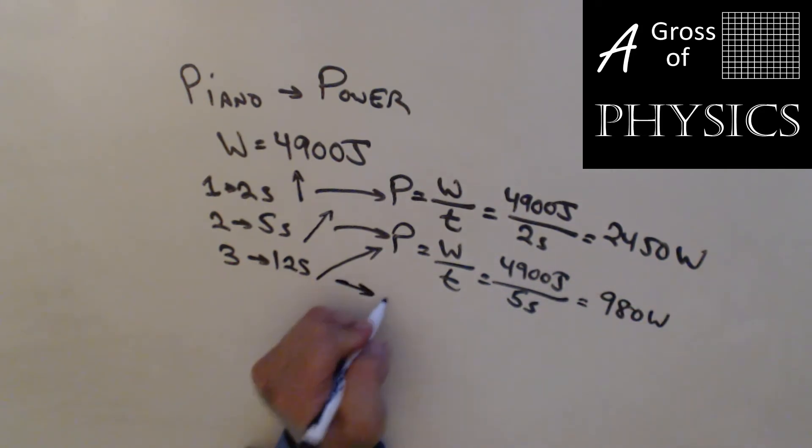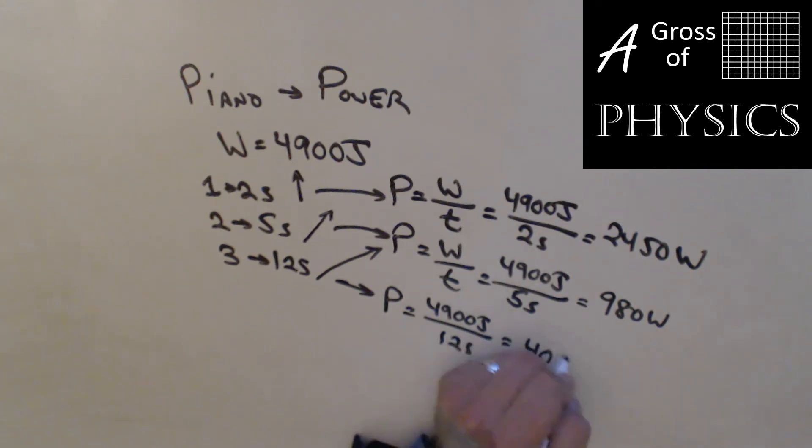Finally, power equals 4900 joules over T. We already have the unit, so let's just make it 12 seconds. 4900 divided by 12, 408.3 watts.